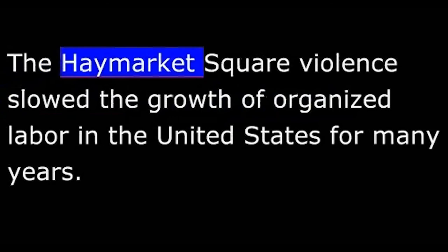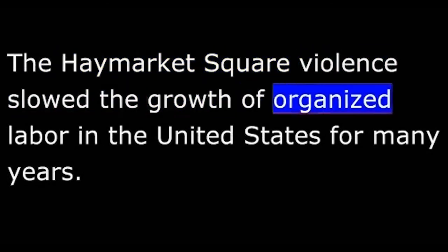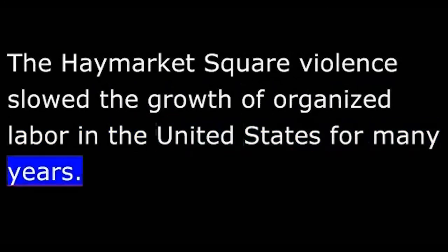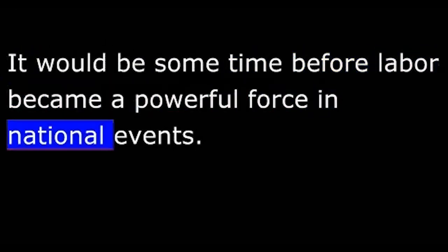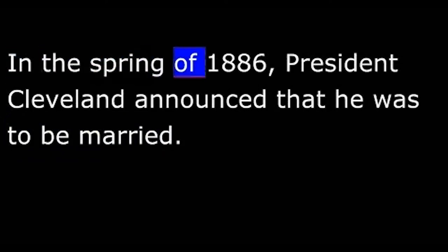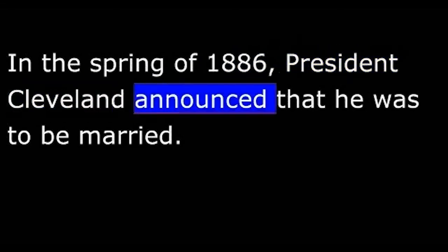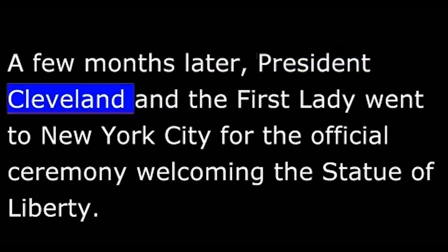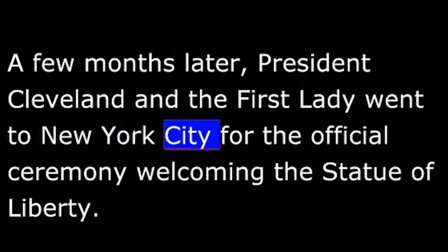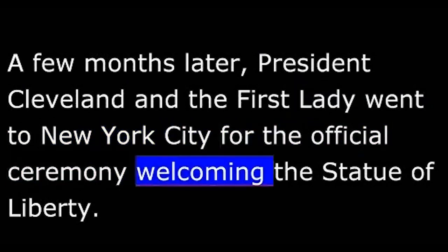The incident set off a wave of fear and anger across the country. The public demanded action against union extremists. The Haymarket Square violence slowed the growth of organized labor in the United States for many years, and it would be some time before labor became a powerful force in national events. In the spring of 1886, President Cleveland announced that he was to be married — the ceremony took place in the White House. A few months later, President Cleveland and the First Lady went to New York City for the official ceremony welcoming the Statue of Liberty.